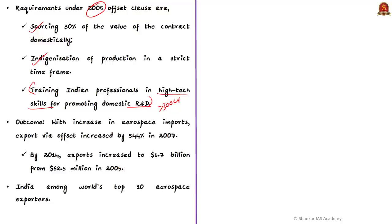So for a 300-crore contract, 90 crores of inputs should be sourced domestically. As aerospace imports increased rapidly, exports via offsets also increased. For example, in 2007 compared to 2006, exports increased by 544%. By 2014, exports from India increased to 6.7 billion dollars from a very small amount of 62 million dollars in 2005. Because of offset clauses, domestic industry has been getting orders, and India was able to join the league of the world's top 10 aerospace exporters.